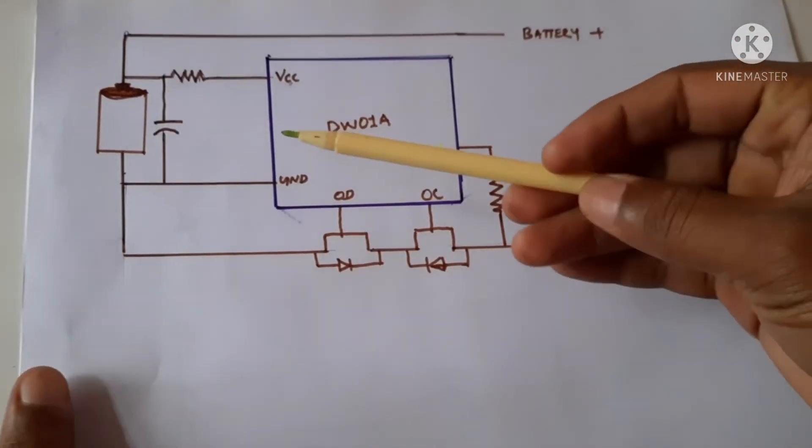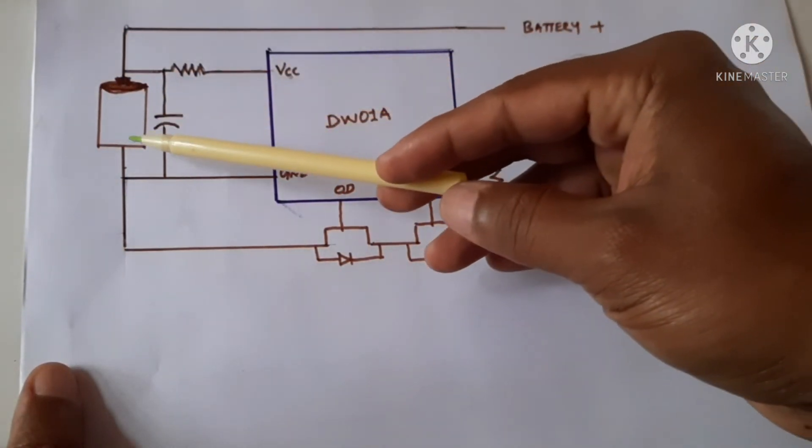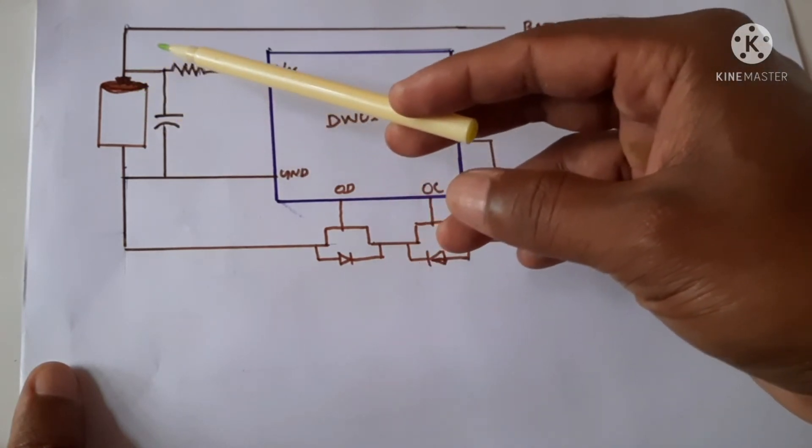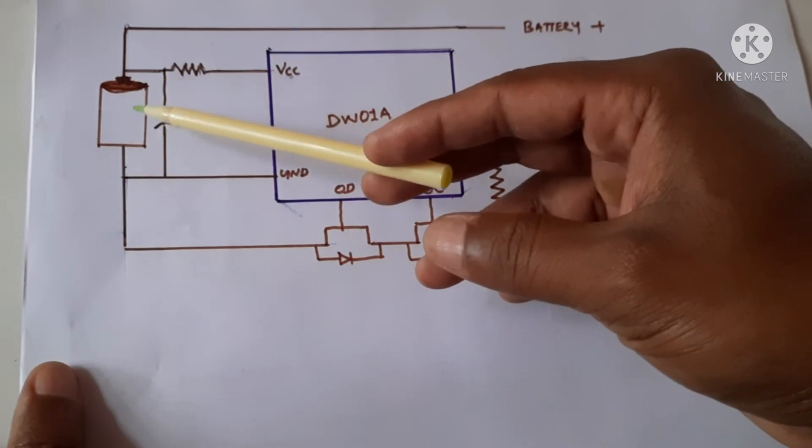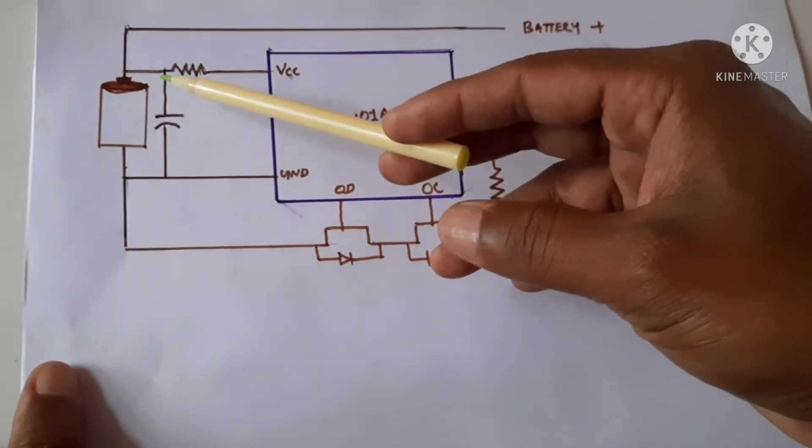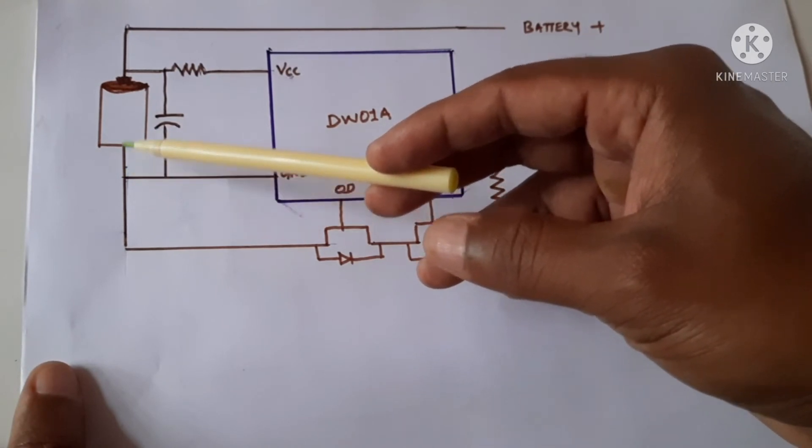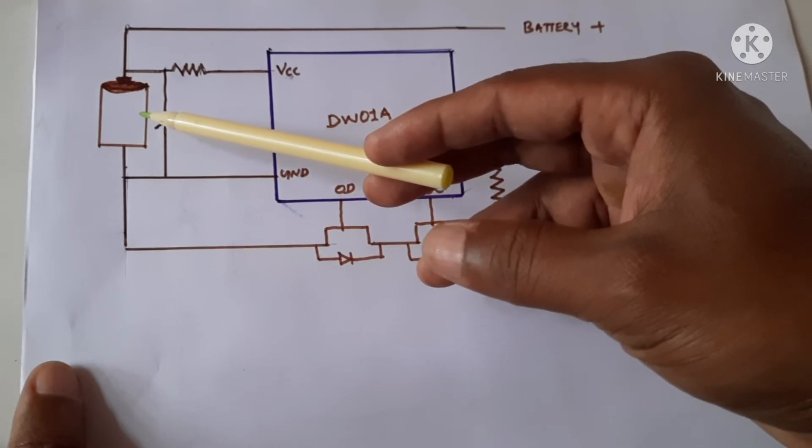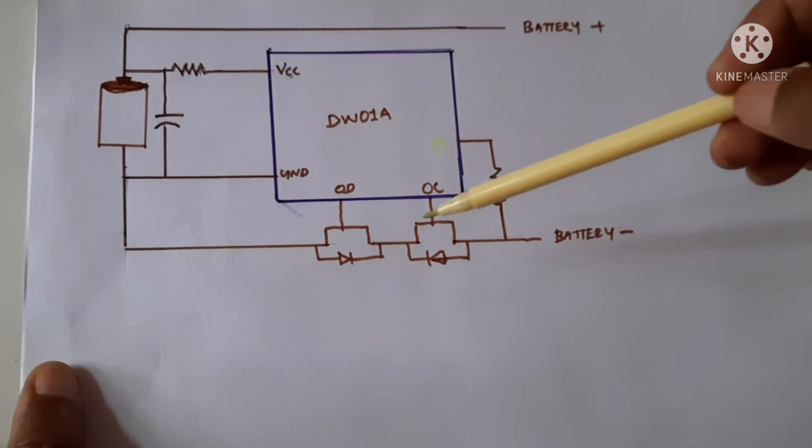So the DW01 IC protects from over voltage. It will not allow the battery to go more than 4.2 volts. And it will not allow the battery to come under 2.4 volts. If it comes under 2.4 volts, we have to charge it again. And when the battery voltage reaches 3 volts, then only we can take the energy from this battery.